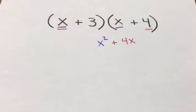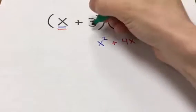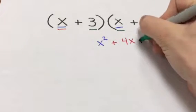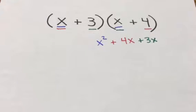Now we move to the I in FOIL, which stands for 'inside' — sometimes called 'inner,' same idea. We take the inside two terms and multiply them together, so 3 times X gives us 3x.